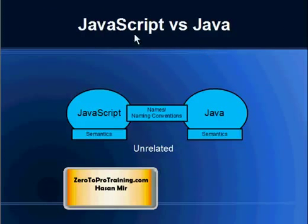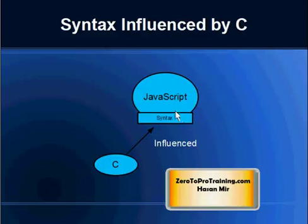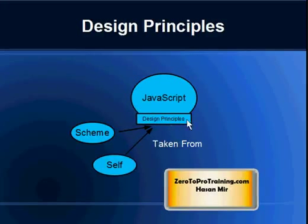What is the relationship of JavaScript with Java? JavaScript does share names and naming conventions with Java. However, both languages have different semantics and they are two different programming languages unrelated to each other. As a matter of fact, JavaScript borrows lots of its syntax from the C programming language, and the design principles of JavaScript are taken from languages called Scheme and Self.